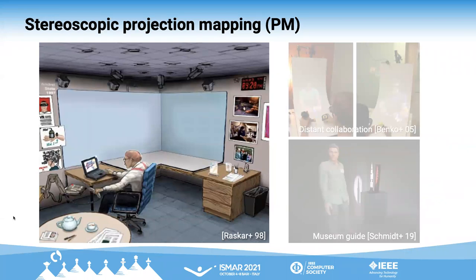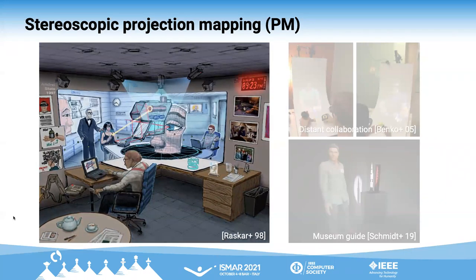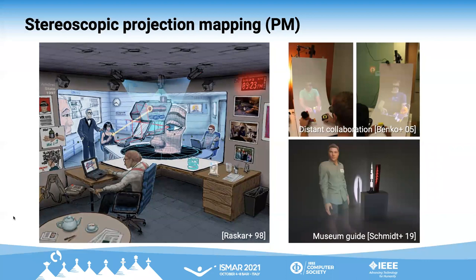Stereoscopic projection mapping allows the user to see a 3D object floating over a physical surface of an arbitrary shape using projected imagery. This technique has been applied for a wide range of fields such as teleconferencing and museum guides.